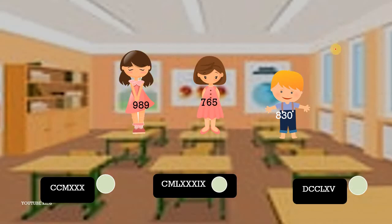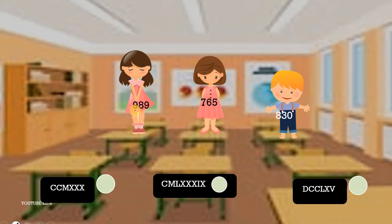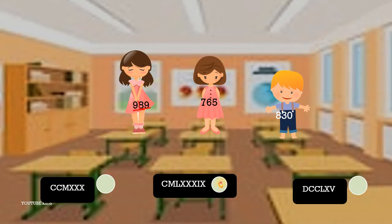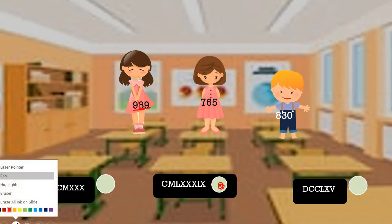In this activity, we have to match the students with their seats. We are looking at 900. In 989, the first part is 9 in the hundreds place. They have written CM, which means 1000 minus 100 equals 900. I'll mark this tile with red, and mark the matching seat with red as well.